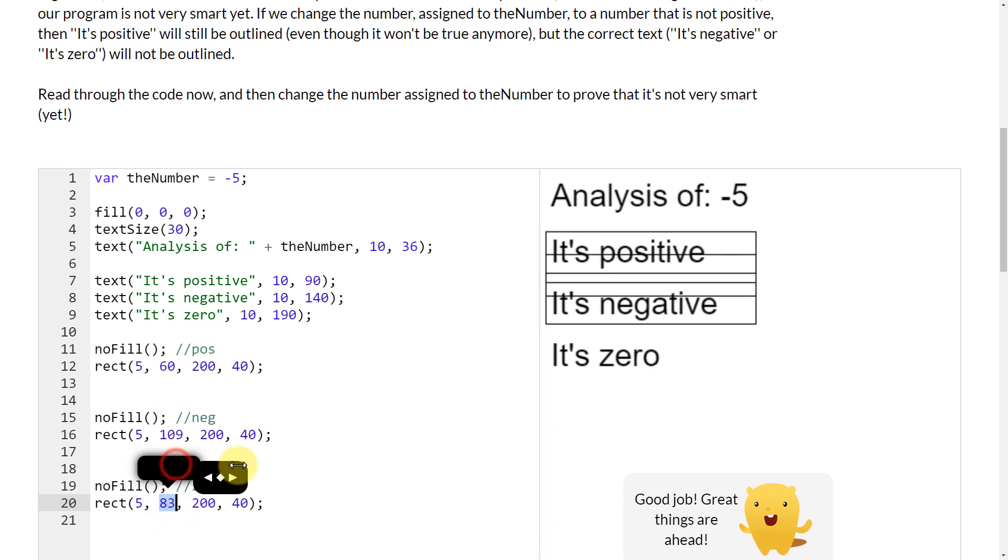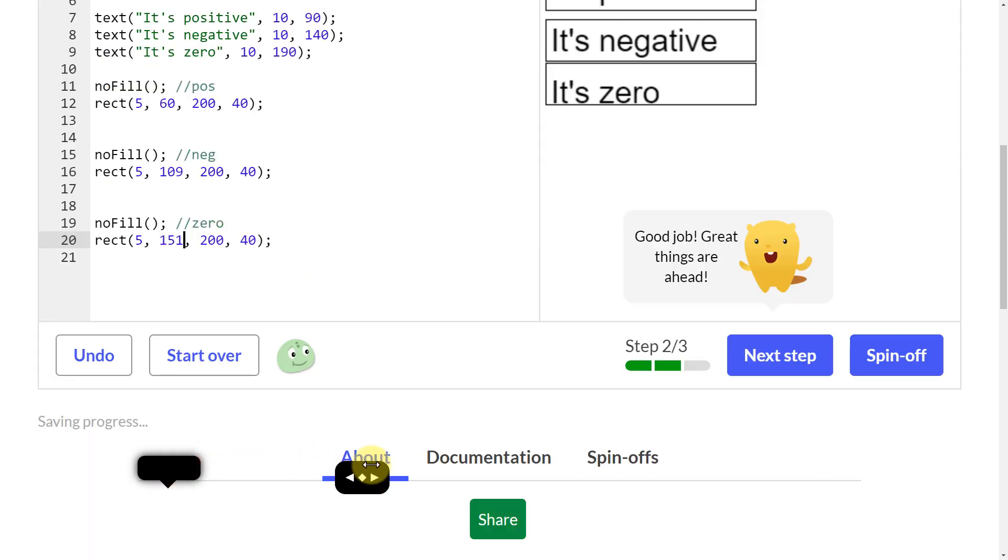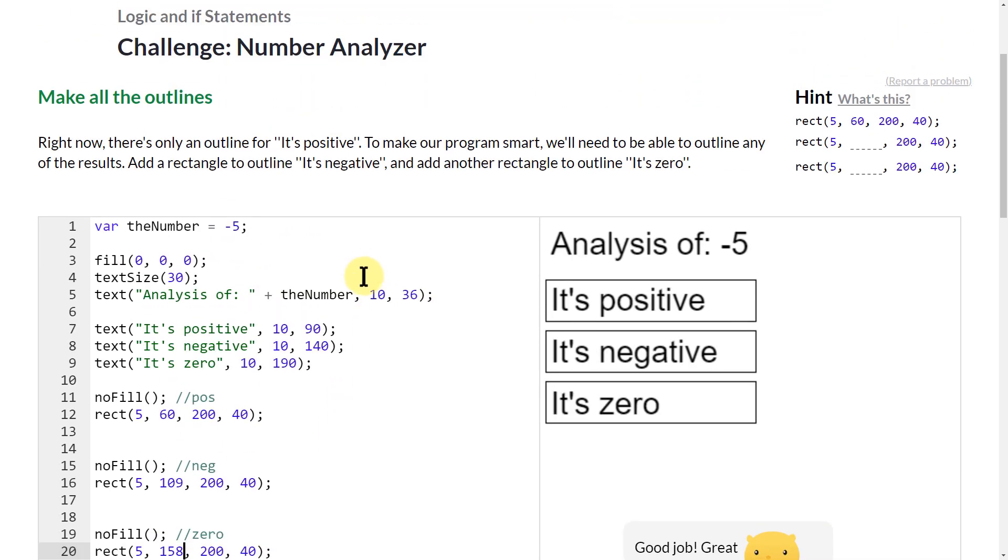And then this one is going to be zero. I'm going to use this and drop it right about there. So now I have three rectangles covering all of them.